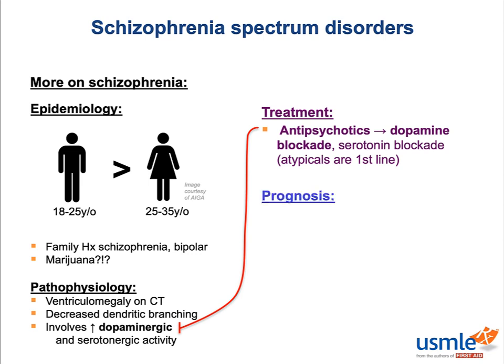Regarding prognosis, schizophrenia is considered one of the most debilitating psychiatric disorders, but the truth is the prognosis can vary a lot. While for some people treating schizophrenia is really a damage control game, some do actually become functioning members of society, especially if they have strong social support.